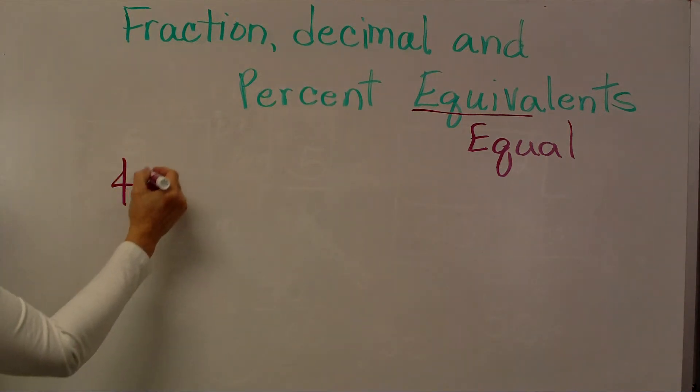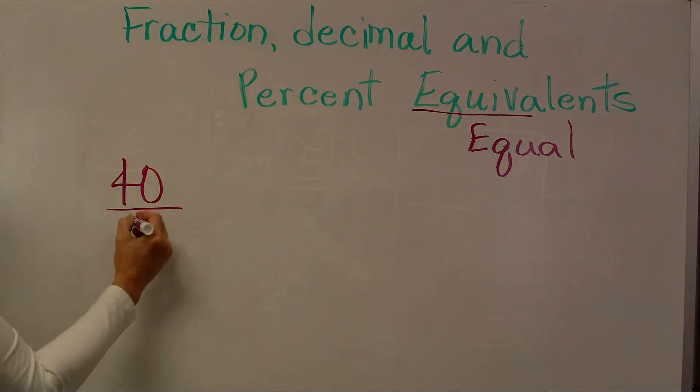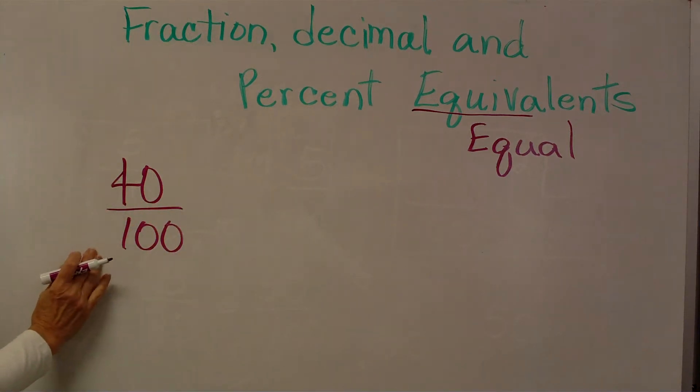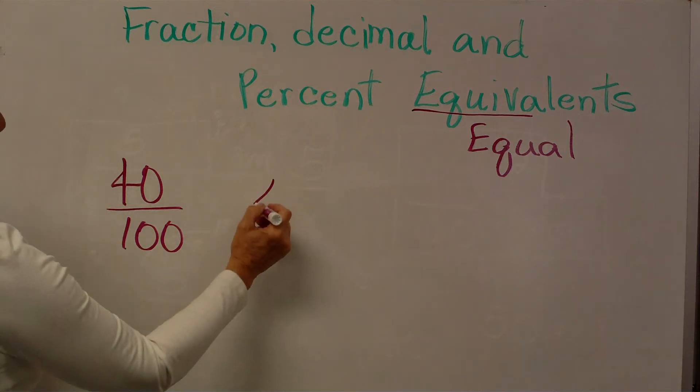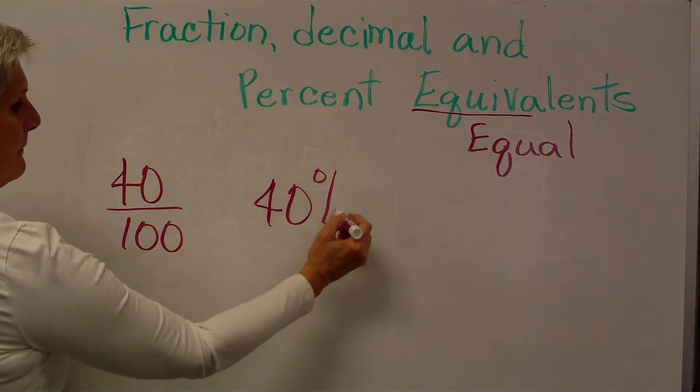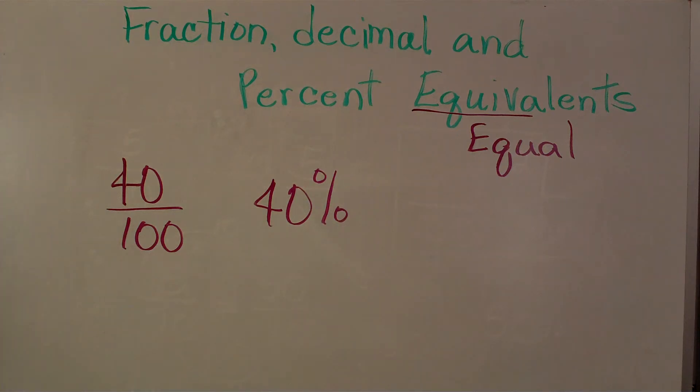Percent means an amount out of 100, and children might see it as a fraction 40 out of 100, or they may see it as 40 percent. Both of these numbers mean the same thing.